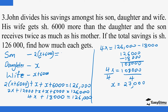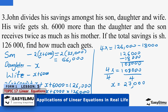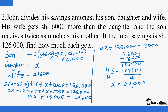Now we find the amount received by each person. The daughter received x = 27,000 shillings. The wife received x + 6,000 = 27,000 + 6,000 = 33,000 shillings. The son received 2 × 33,000 = 66,000 shillings. That is all that was needed.